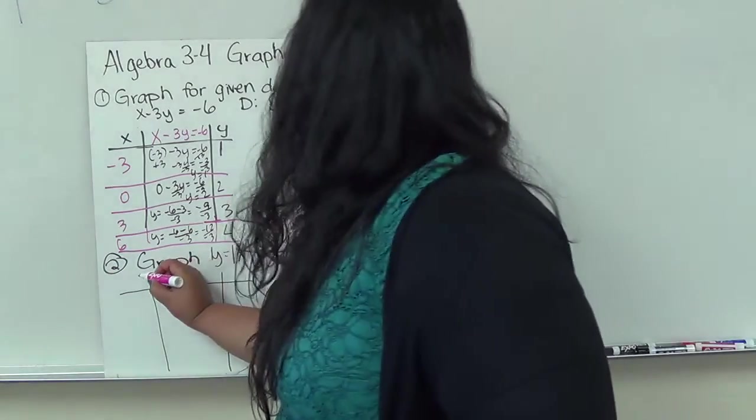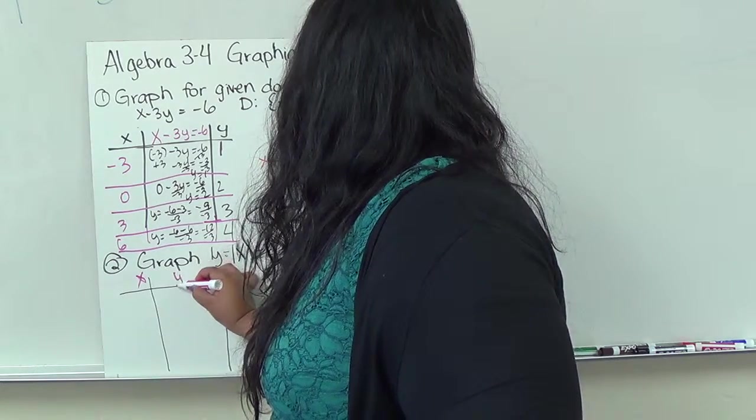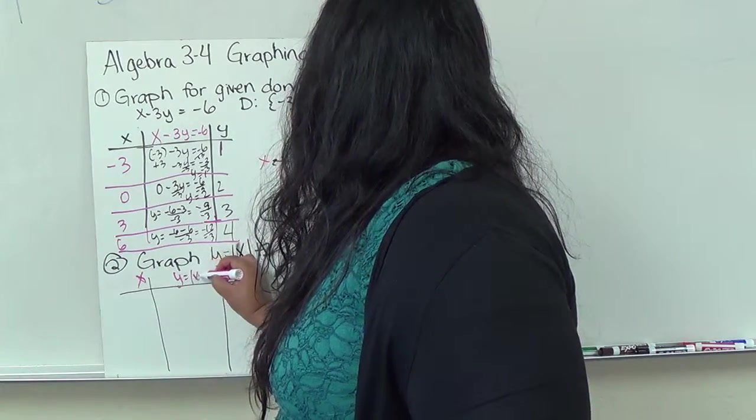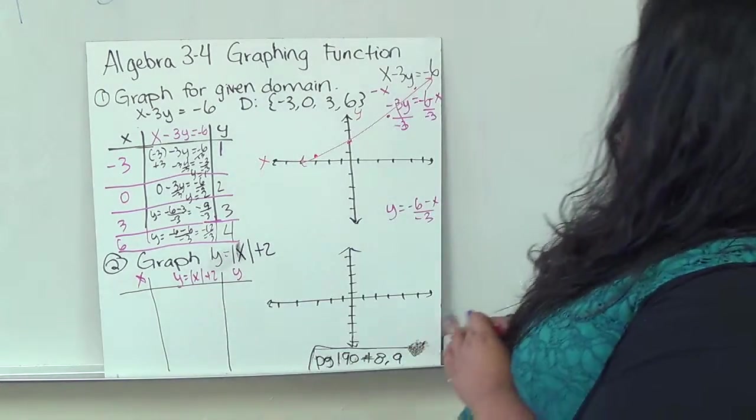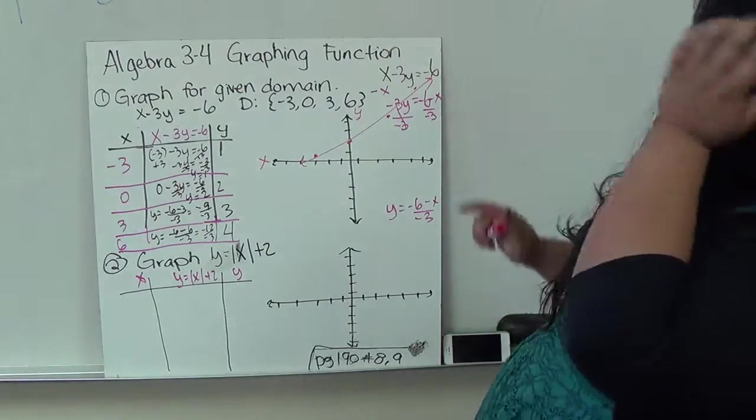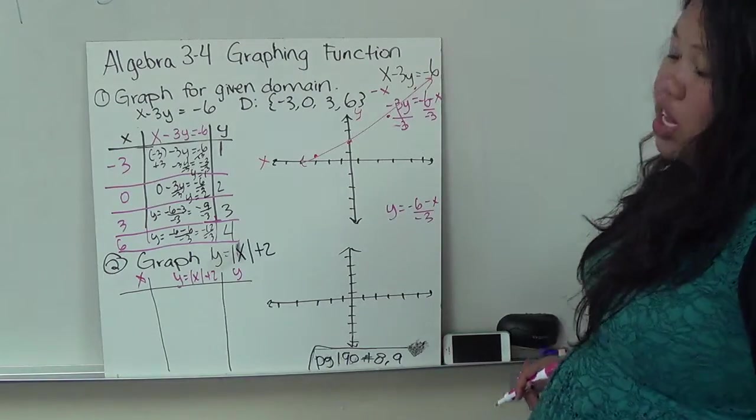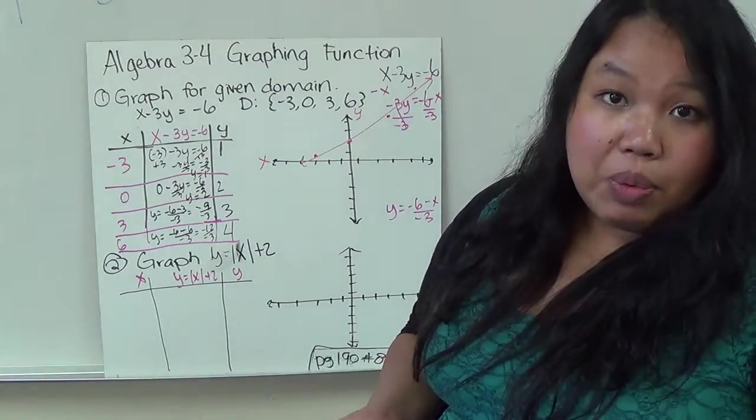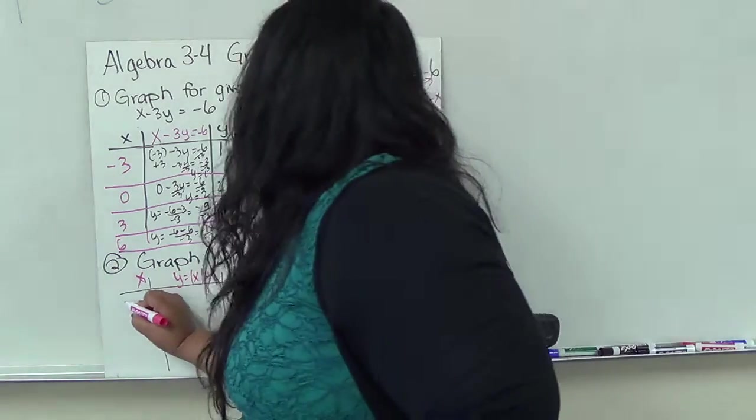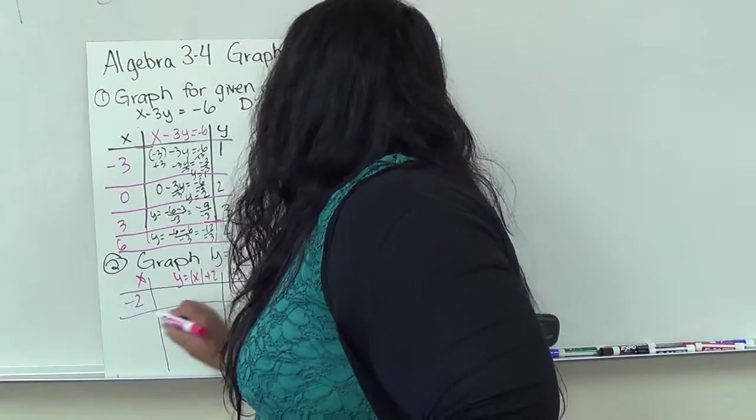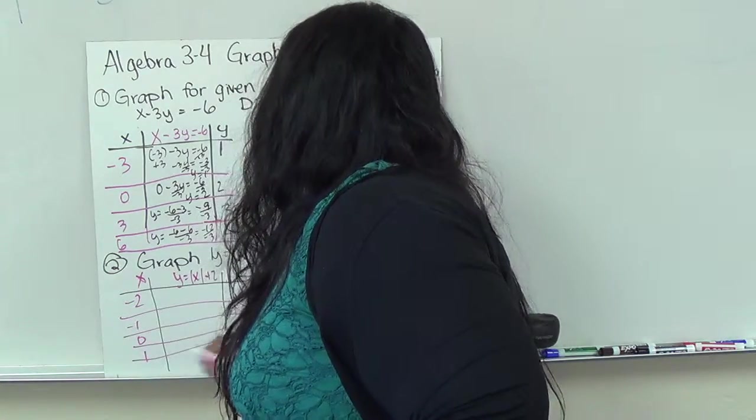The absolute value of x plus 2. So again, I have my x, I'm going to have my equation. Now, this one, the y is already isolated so I don't have to worry about it, but it doesn't give me a domain or a certain amount of x's that I need to do. If they don't give it to you, all you need to do is come up with your own. Basically, the ones I stick with is negative 2 to positive 2. So negative 2, negative 1, 0, 1, 2.